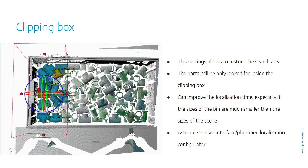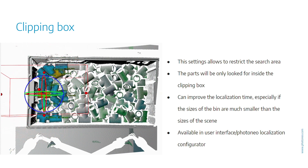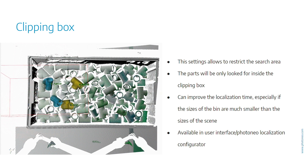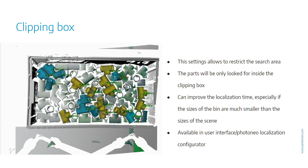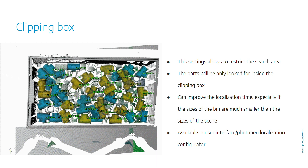Using this feature, if you have two boxes with the same objects you can tell the localization to only look into one of them. Even if this is not your case, using this tool can significantly result in shorter localization time, which in the end means faster cycle time for you.